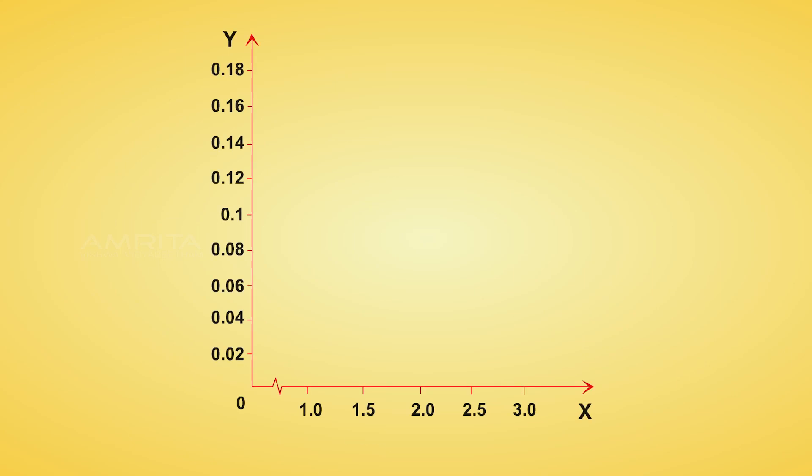A graph is plotted with load MG along x axis and extension L along the y-axis. A straight line graph is obtained. From the reciprocal of the slope of the graph, the spring constant K is calculated.